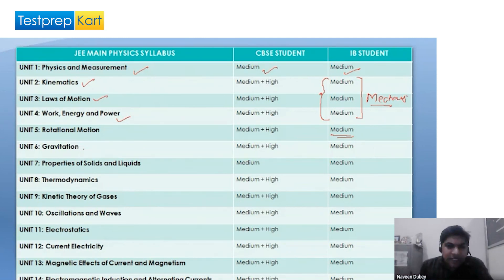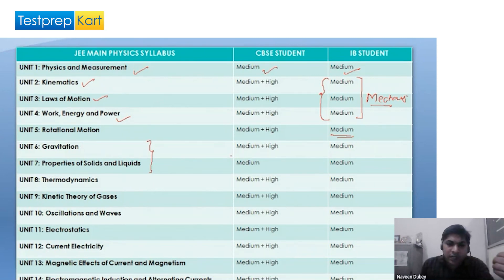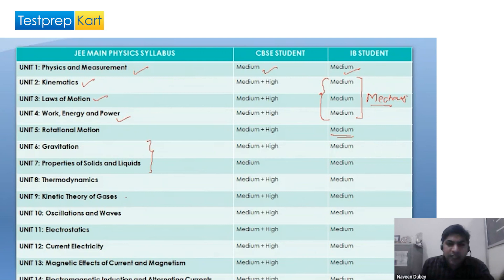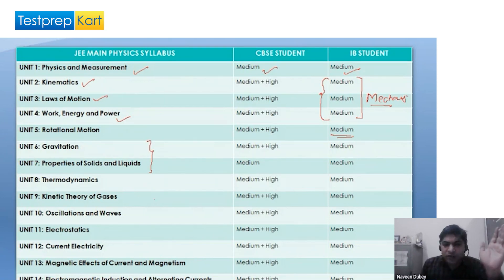Gravitation and properties of solids have almost similar difficulty levels in both JEE and IB curriculum. For thermodynamics, there is detailed discussion of thermodynamics and kinetic theory of gases in JEE Mains curriculum, but in the IB curriculum these two topics are of moderate difficulty level only.